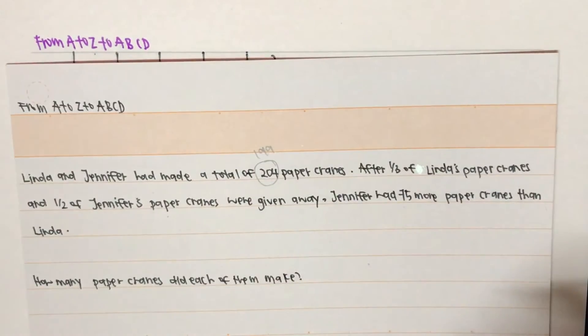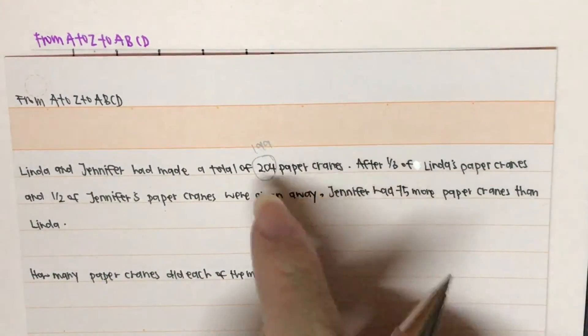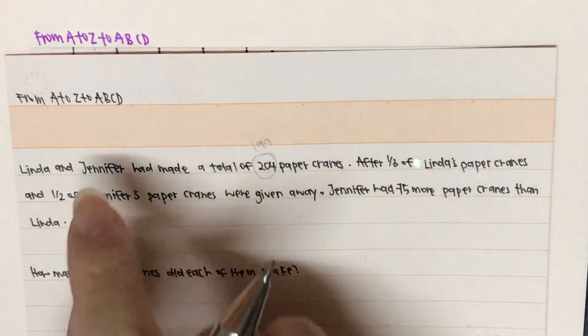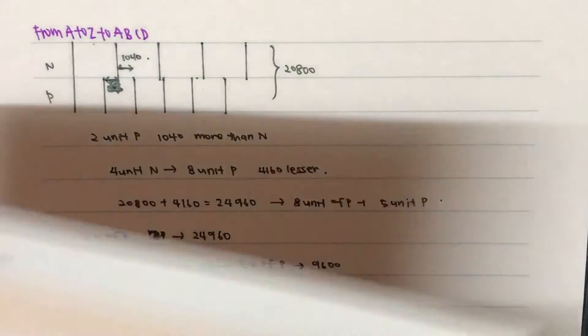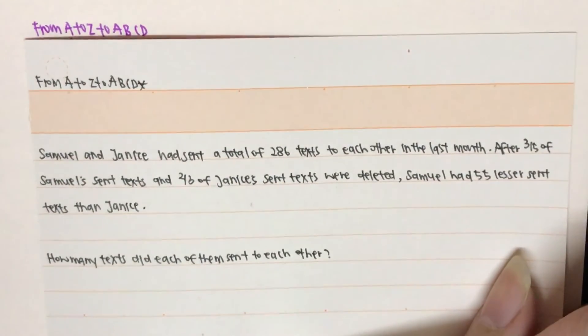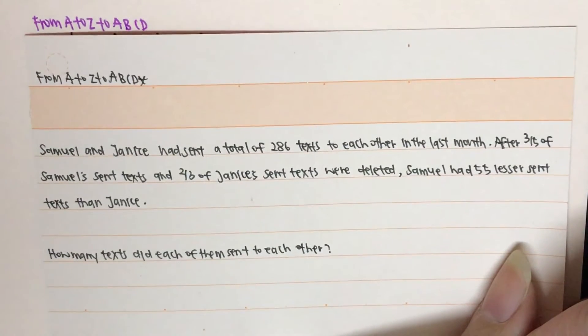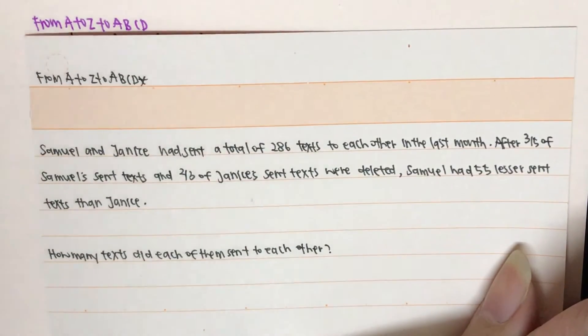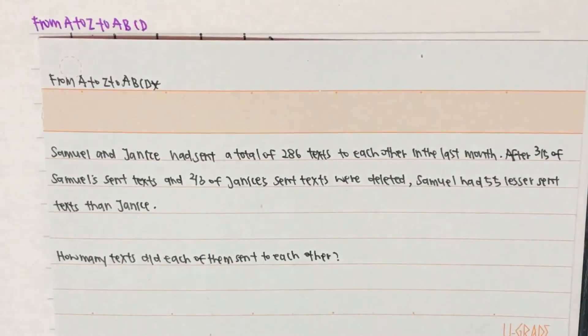The solution is, Lyndall has 21 paper cranes and Jennifer has 178 paper cranes. For question 3, Samuel has 55 stickers and Janice has 231 stickers.